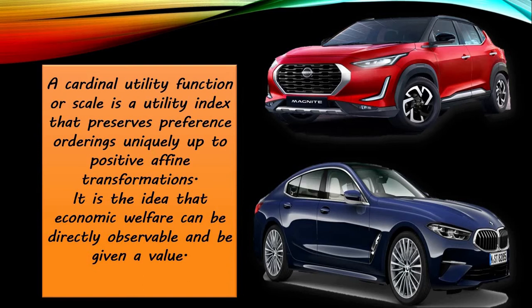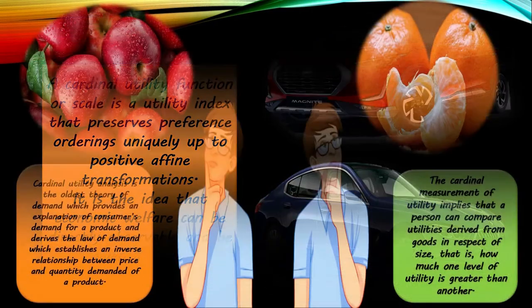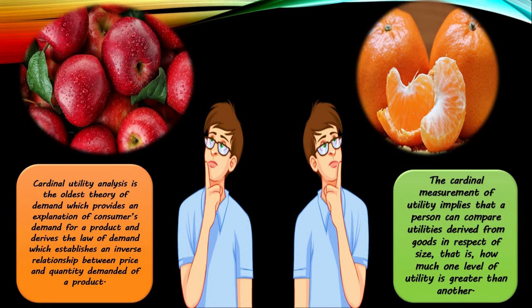Another example of cardinal utility: suppose a person says that the utility he gets from consuming one unit of apple is double the utility he obtains from consuming one unit of orange. This implies that a person can compare utilities derived from goods in terms of size — how much one level of utility is greater than another. Remember, this is the oldest theory of demand.